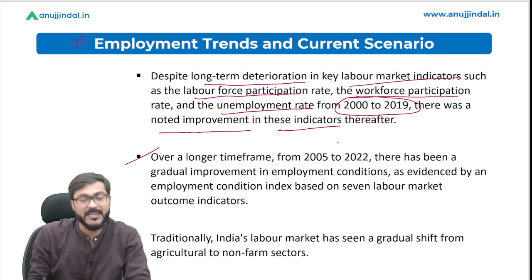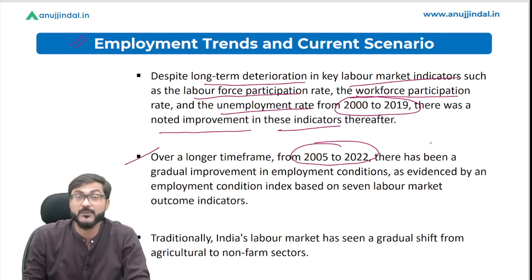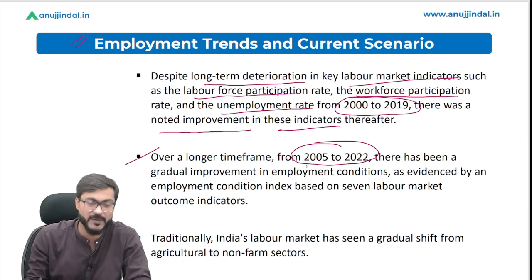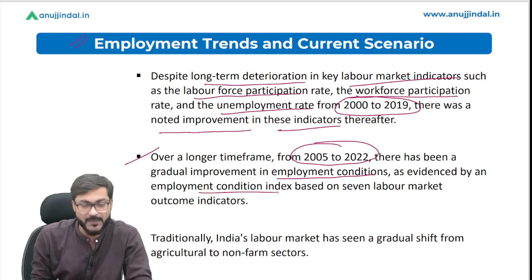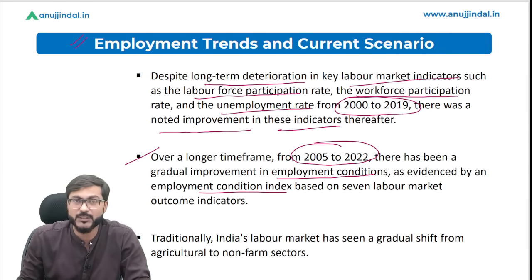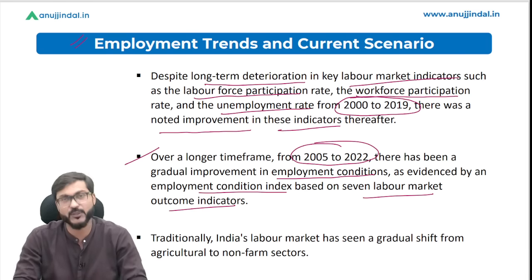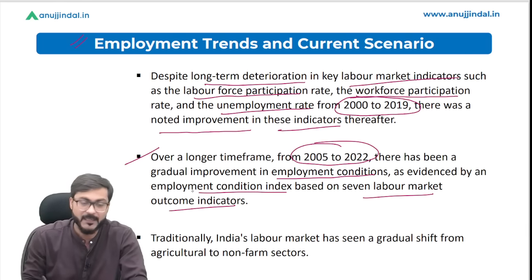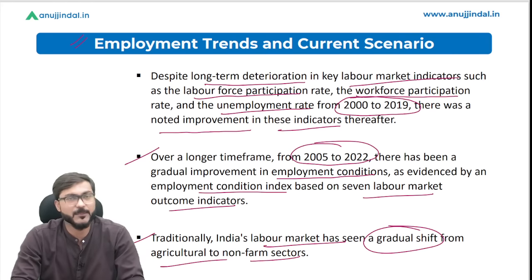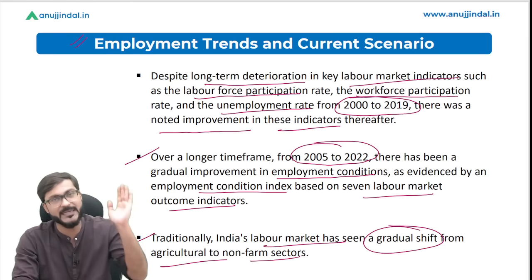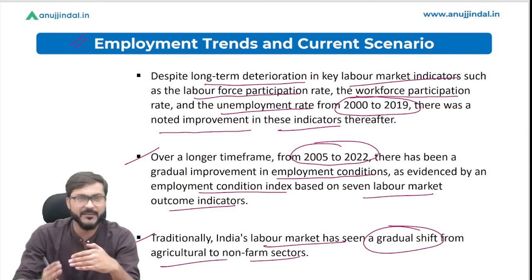Over the longer time frame from 2005 to 2022, there has been a gradual improvement in employment conditions in the country, as evidenced by the Employment Conditions Index, which was based on seven labor market outcome indicators. Traditionally, India's labor market has seen a gradual shift from agricultural to non-farm sectors, and the percentage of people involved in agriculture has been decreasing.